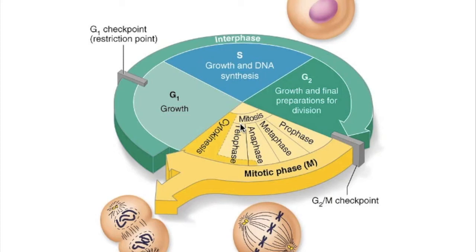The cell cycle is a series of changes a cell goes through from the time it is first formed until the time it reproduces. Interphase and the M phase, or the mitotic phase, are the two main periods of the cell cycle.